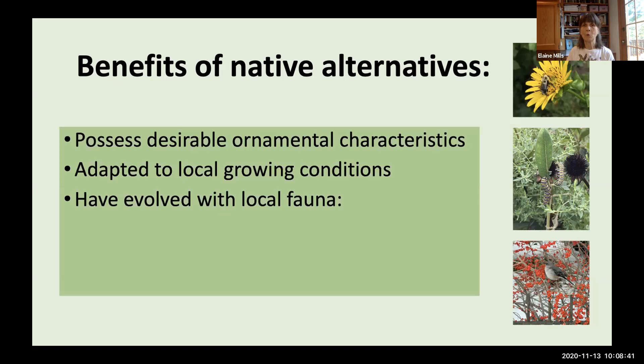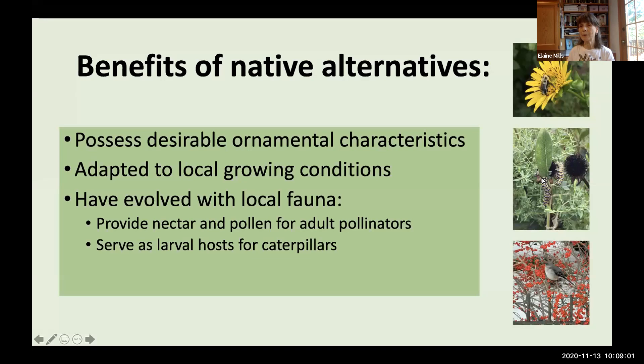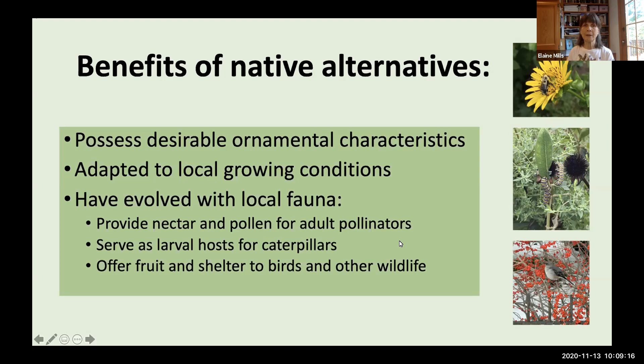Native plants provide nectar and pollen for adult pollinators — for example, a bee on a cup plant. They can serve as larval hosts for caterpillars; the monarch butterfly's caterpillar stage depends on common milkweed. We want plants that support not just adult insects with nectar and pollen, but the whole life cycle. Native plants can also offer fruit and shelter to birds and other wildlife, as shown by a mockingbird on a native winterberry shrub.